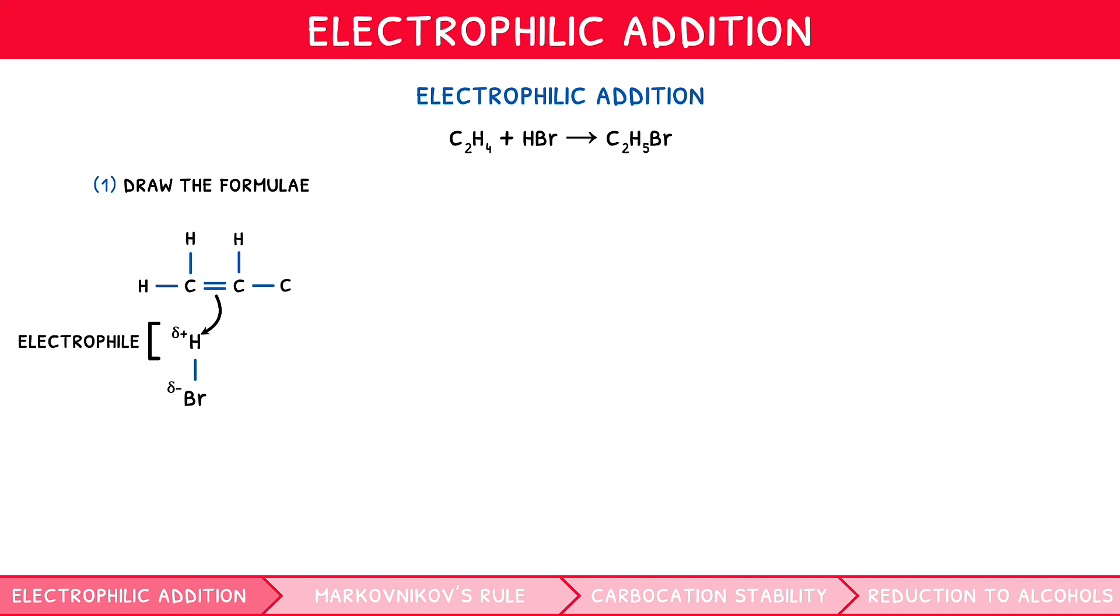Unlike the half-headed curly arrow introduced within topic 10 in free radical substitution, which represented the movement of one electron via homolytic fission, double-headed curly arrows represent the movement of two electrons via heterolytic fission.